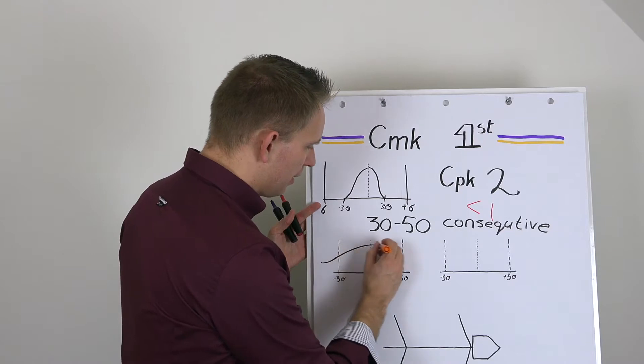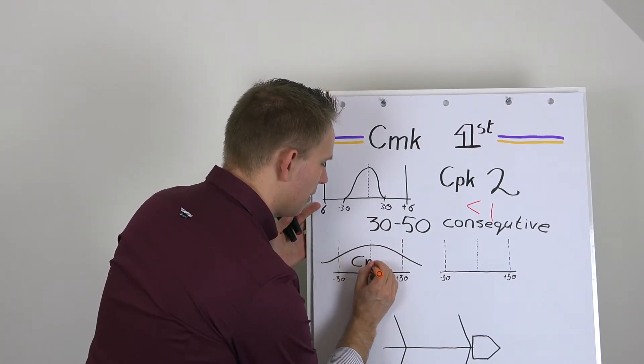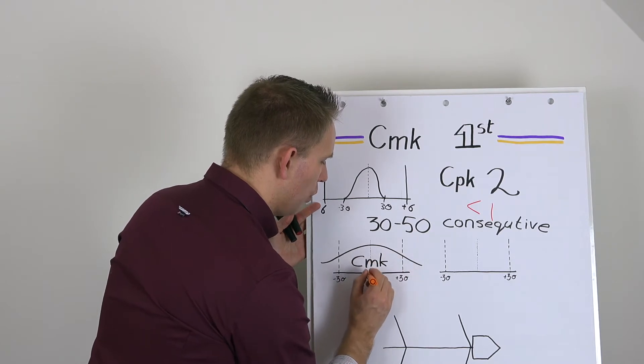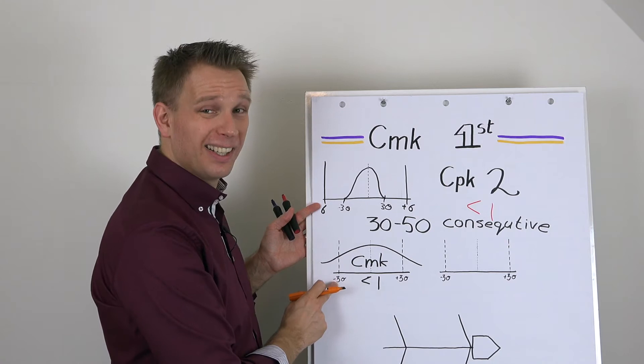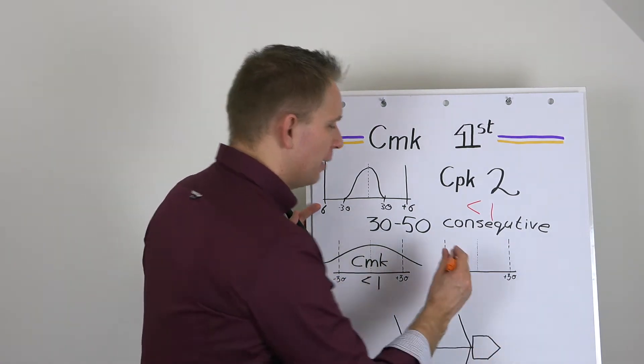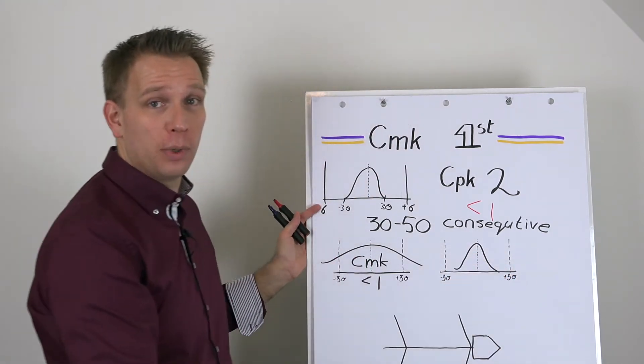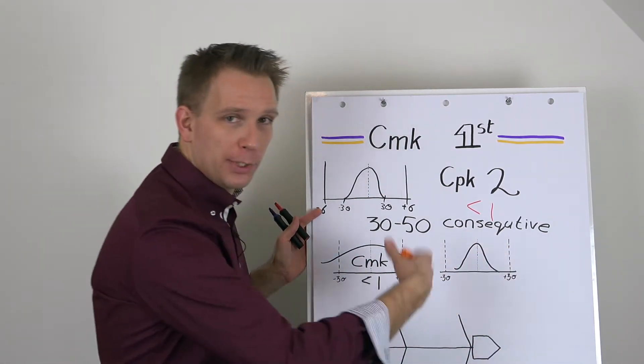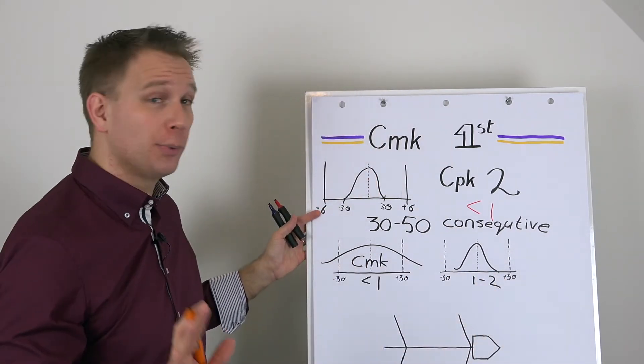So you either get something that has a CMK of well below one, because you cannot even stay within the three sigma reach, or you get something that is at least well within the margin. It's somewhere between one and two, maybe higher than two if you're very lucky.